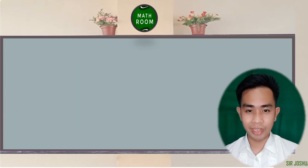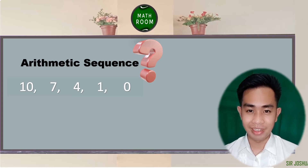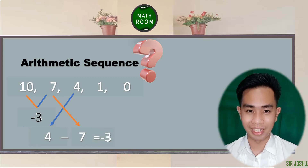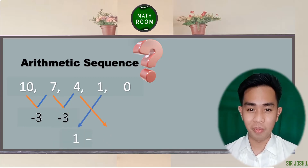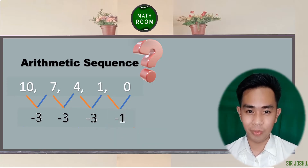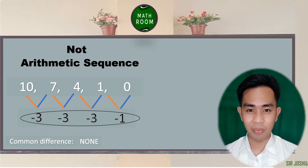Let's determine if this is an example of arithmetic sequence: 10, 7, 4, 1, 0. Let's begin by getting the common difference. The second term, 7, minus the first term, 10, is equal to negative 3. The third term, 4, minus the second term, 7, is also negative 3. The fourth term, 1, minus the third term, 4, is equal to negative 3. Lastly, the fifth term, 0, minus the fourth term, 1, is equal to negative 1. You will notice that we don't have a common difference. Therefore, we can conclude that this is not an example of arithmetic sequence.